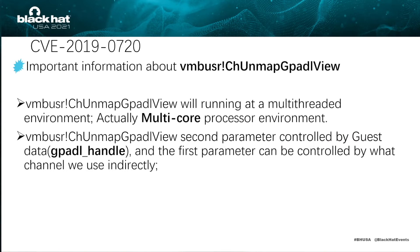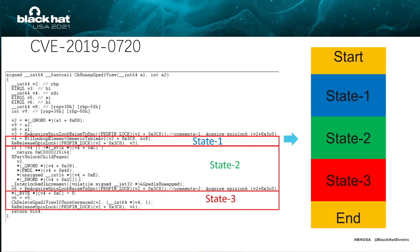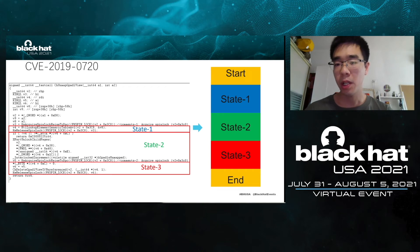There is some important information about unmap_gpadl_view. This function runs in a multi-threaded, multi-core process environment. The second parameter is controlled by guest data (gpadl handle) and the first parameter can be controlled indirectly by which channel is used. I divide this function into three parts with different colors. State 1: acquires the spin lock, invokes lookup_element_generic_table_avl, then exits the critical region. State 2: does something and tries to acquire the spin lock. State 3: invokes delete_gpadl_view_if_unreferenced and exits the critical region.